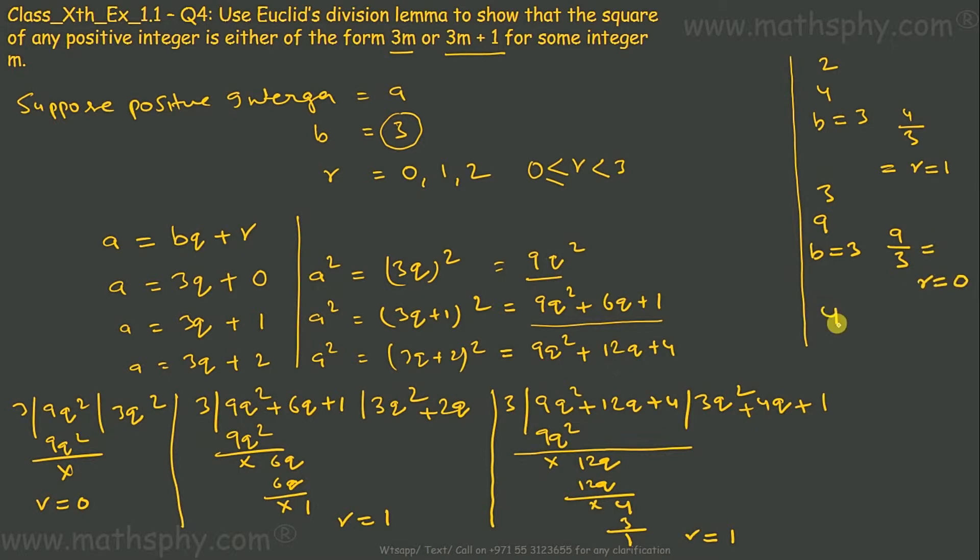Let's take 4. 4² is 16. 16 divided by 3 gives you remainder 1. So I can see the square of any positive integer when divided by 3 is giving remainder either 1 or 0.